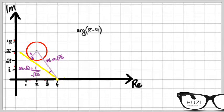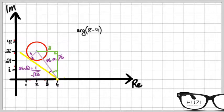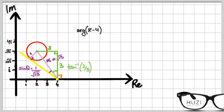Now for the other triangle: this angle is 90 degrees, this side is 2, and this side is 3. To find this angle we can simply do tan inverse of 2 over 3. Lastly, we add π/2 or 90 degrees to it, and through this we have calculated the smallest possible value of the argument of z minus 4.